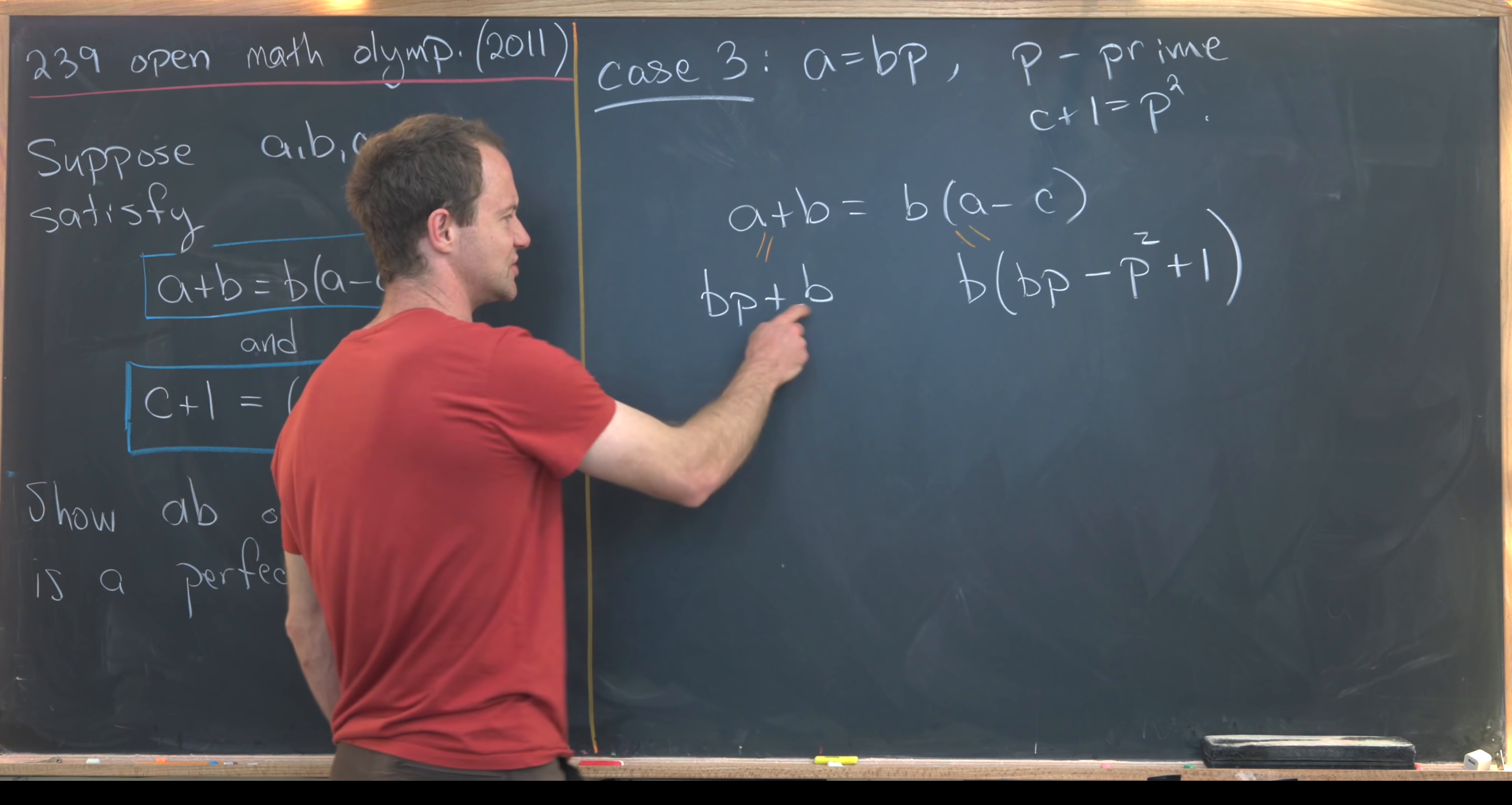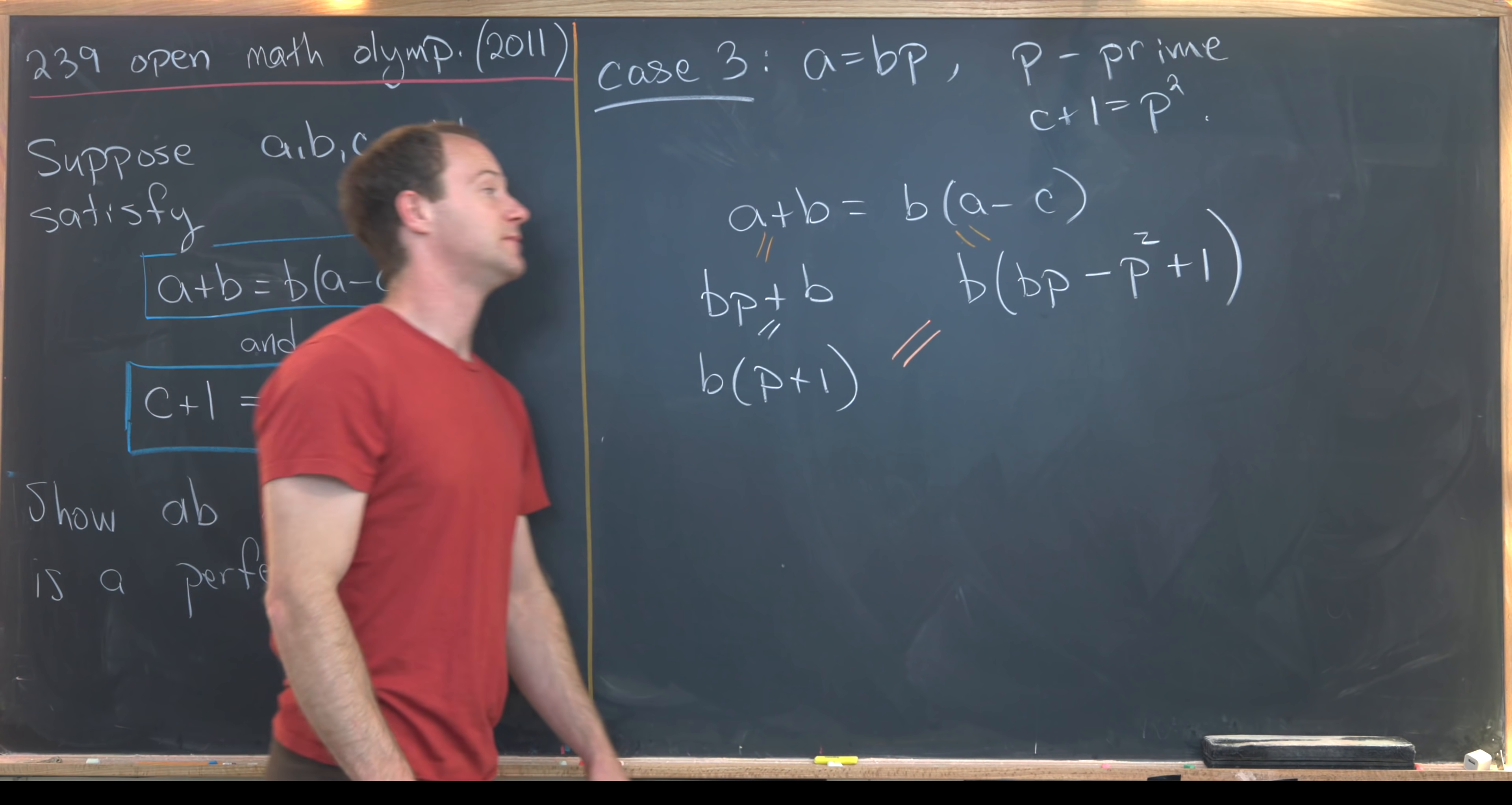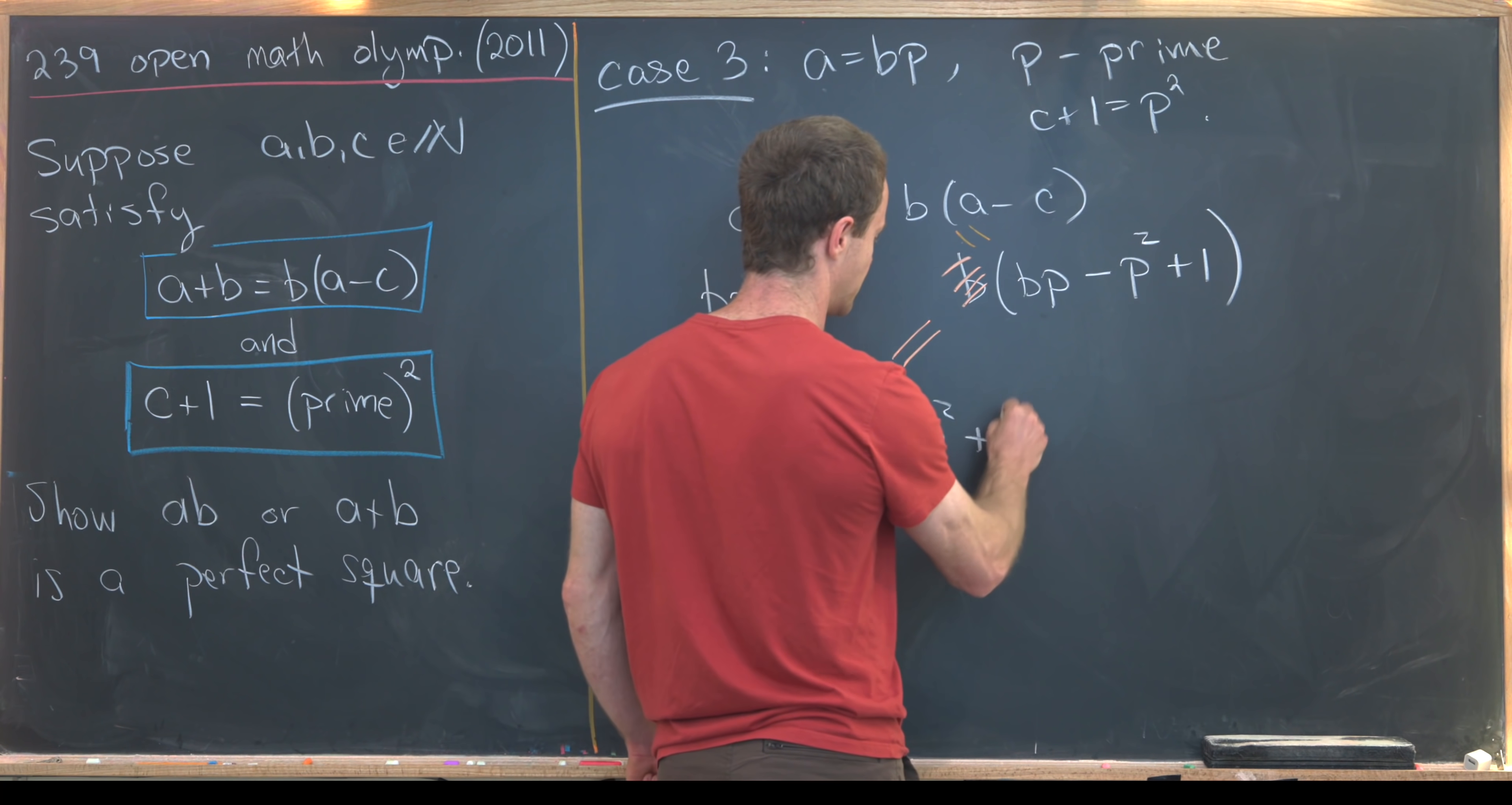So next I can just easily factor a b out of this left hand side. And that gives me a new equation which is super useful. So I've got this b(p+1) = b(bp-p²+1). From here I'll cancel off the b's just by dividing by b. And that will give me p+1 = b(p-p²+1).